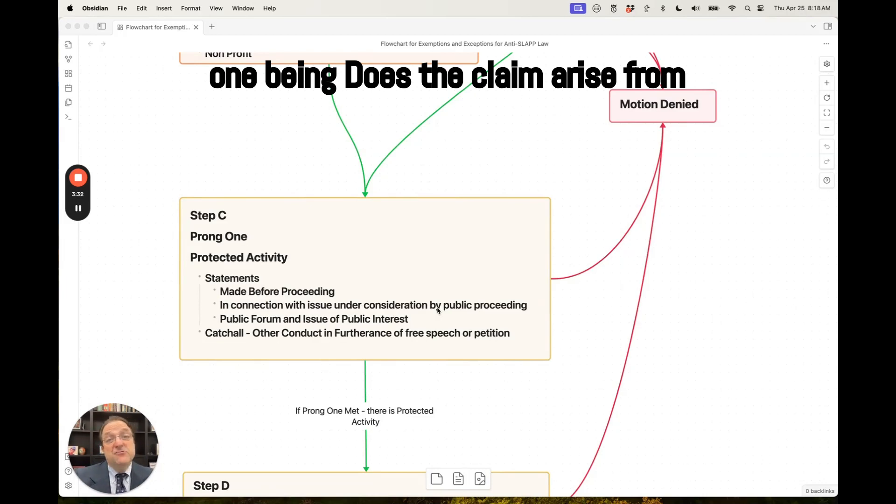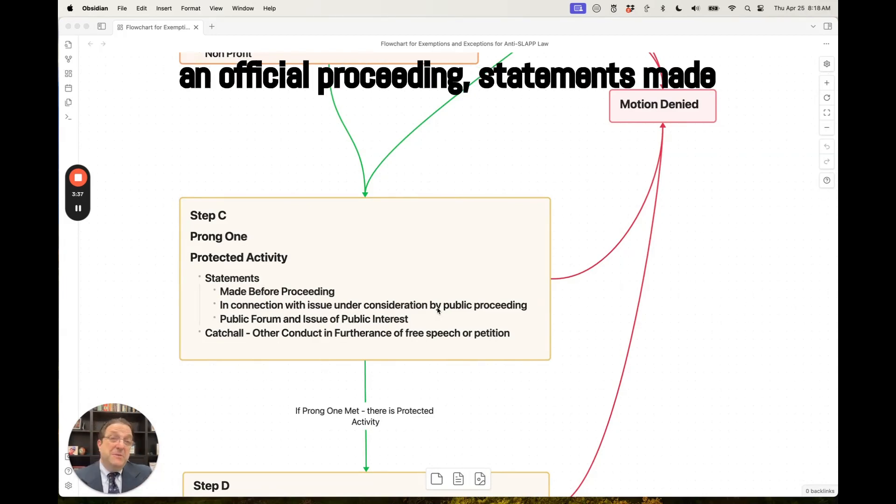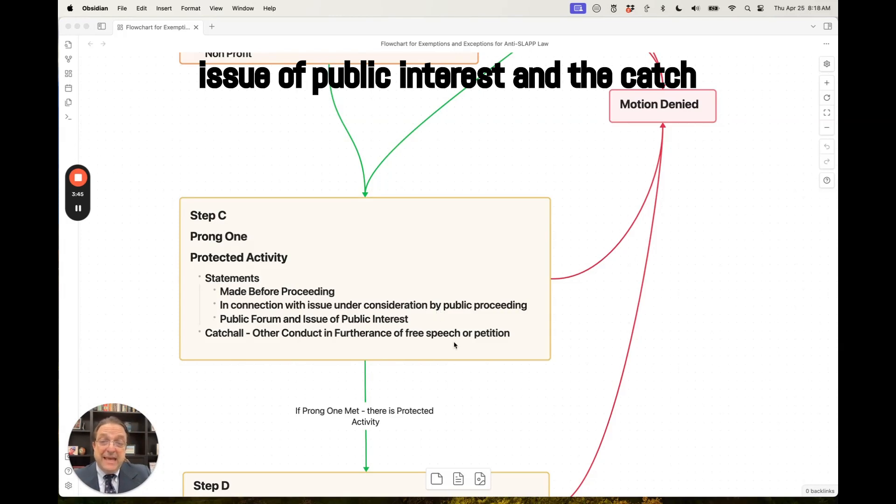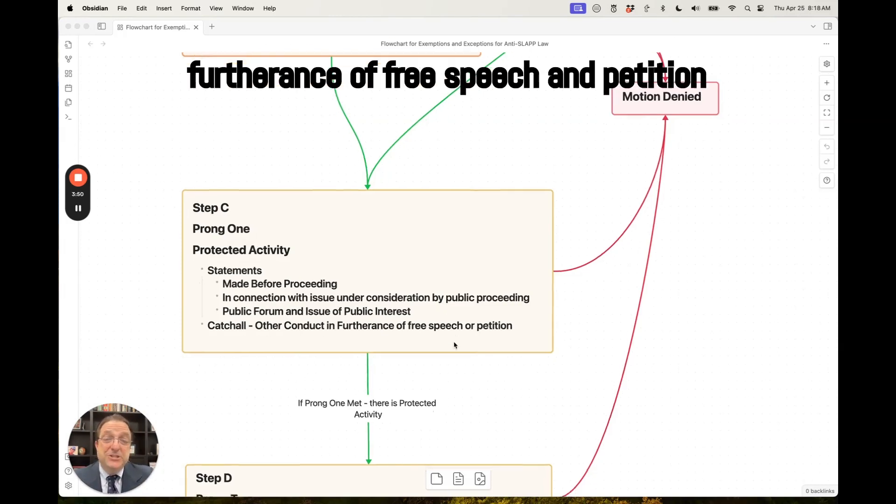Prong one being, does the claim arise from protected activity, such as those made in an official proceeding, statements made in connection with issues under consideration by a public body, statements made in a public forum concerning an issue of public interest, and the catch-all category of other conduct in furtherance of free speech and petition rights.